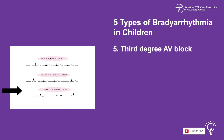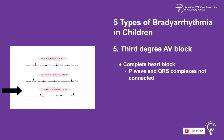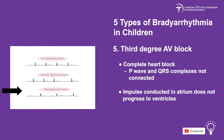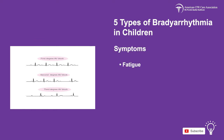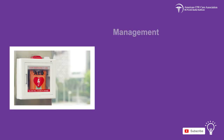The fifth and final type of bradycardia is third-degree AV block, also known as complete heart block, where the P-wave and the QRS complexes are not connected. The impulse conducted in the atrium does not progress to the ventricles, and there is no communication between the atrium and the ventricles. Symptoms may include fatigue, lightheadedness, or fainting.